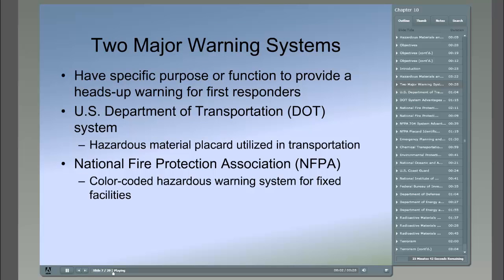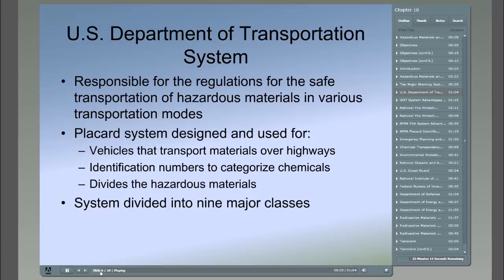Two warning systems have a specific purpose to provide a heads-up warning for first responders: the hazardous material placards utilized in transportation and the color-coded hazardous warning systems for fixed facilities. The two organizations responsible for these warning systems are the U.S. Department of Transportation, the DOT, and the National Fire Protection Association, the NFPA. The DOT is a federal agency responsible for the regulations for safe transportation of hazardous materials in various transportation modes, and has established a required warning system for vehicles transporting hazardous materials on highways.